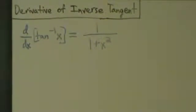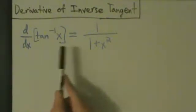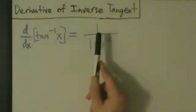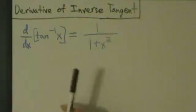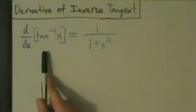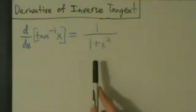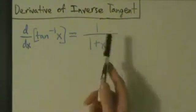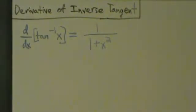So now we're going to talk about the inverse tangent function and its derivative. d/dx of inverse tangent of x equals 1 over 1 plus x squared. That's pretty interesting — the derivative of this inverse trig function gives you just this nice rational function. No square roots, nothing like that.